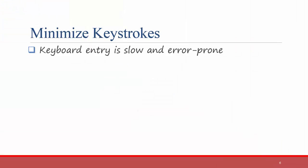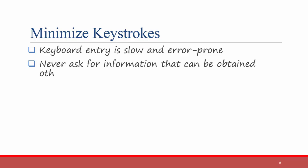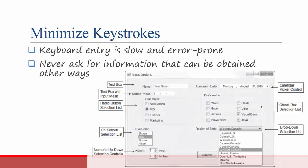We want to minimize keystrokes because keyboard entry is slow and error prone. Never ask for information that can be obtained other ways, even if you don't have barcode readers and other source data automation technologies. There are other ways to minimize keystrokes, for example by using input options such as radio buttons, on-screen selection lists, numeric controls, check boxes, drop-down lists, and calendar picker controls.